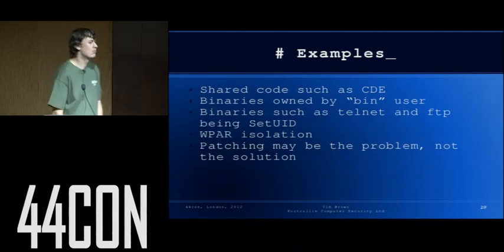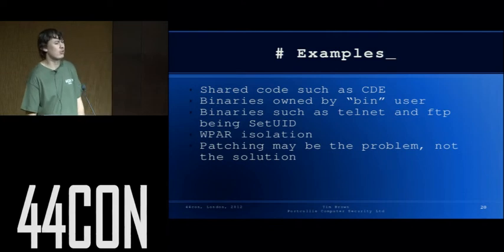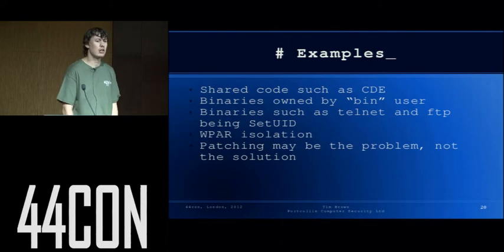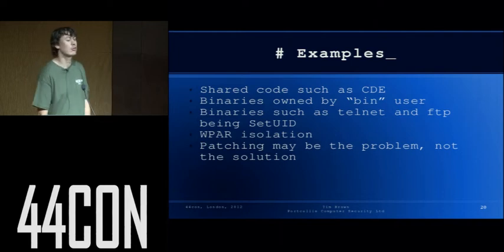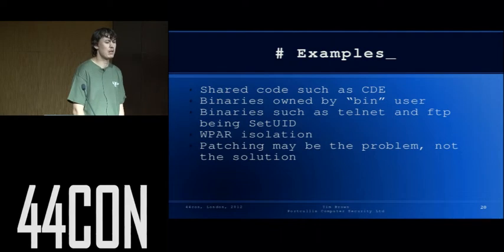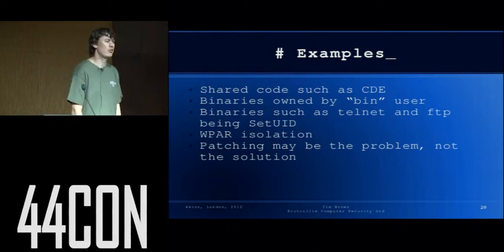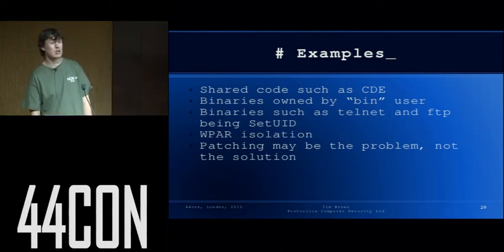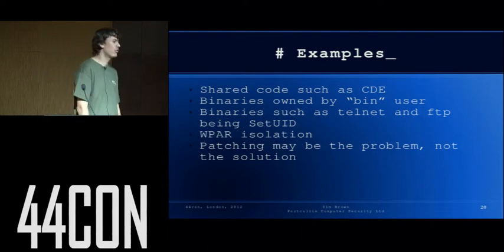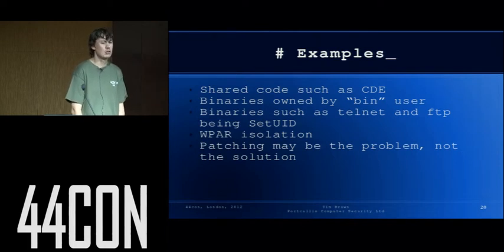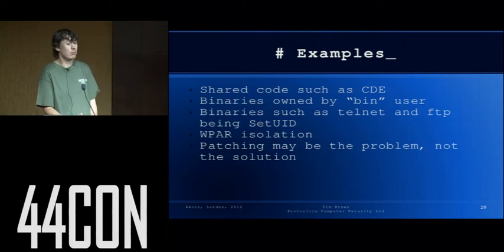Some examples. A lot of Unixes have shared code such as CDE — the CDE source is now available, and I'd strongly recommend going and having a look because there is at least one bug in there that should be knocked out. Bad defaults: many Unixes, AIX and Solaris particularly, make a lot of the binaries owned by bin, but they get spawned as root. If you're familiar with the Telnet bug of some years back, it was possible to get into a system via Telnet as the bin user, then replace a bin-owned file that's run as root — there's your privilege escalation vector.